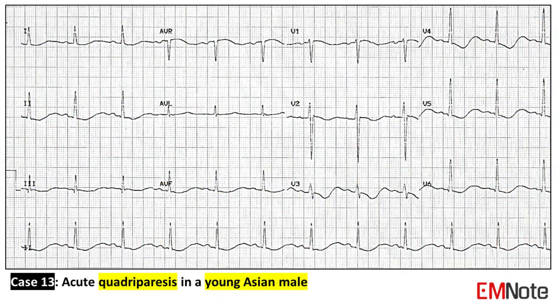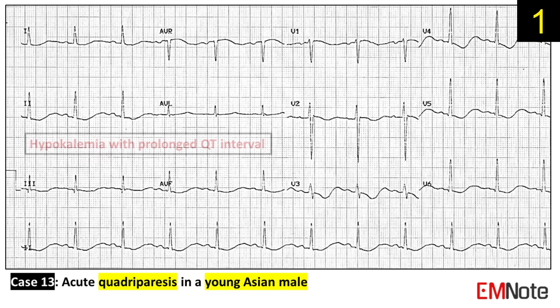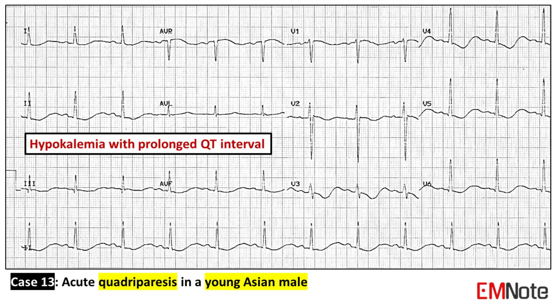Case 13: The patient is a young Asian male presenting with acute quadriparesis. The ECG shows prolonged QT intervals. The combination of prolonged QT intervals and quadriparesis in Asian males suggests the diagnosis of thyrotoxic periodic paralysis, which consists of hypokalemia and thyrotoxicosis.